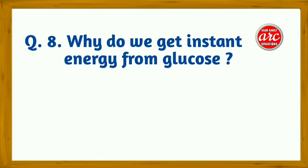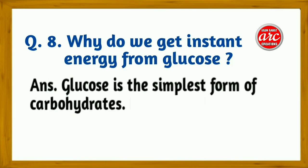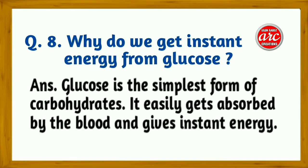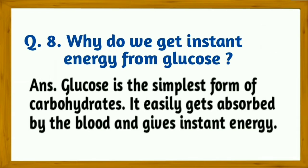Question 8: Why do you get instant energy from glucose? Answer: Glucose is the simplest form of carbohydrate. It is easily absorbed by the blood and gives instant energy.